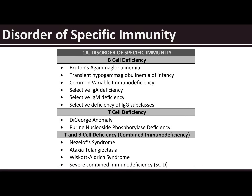Under B cell deficiency we have: agammaglobulinemia, also known as Bruton's agammaglobulinemia; DiGeorge anomaly; and purine nucleoside phosphorylase deficiency. For the combined T and B cell deficiency, we have Neselof syndrome, ataxia telangiectasia, Wiskott-Aldrich syndrome, and severe combined immunodeficiency.